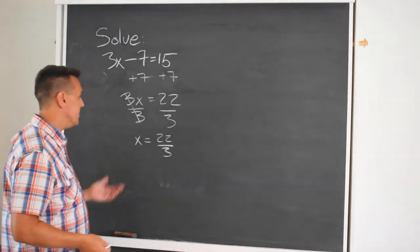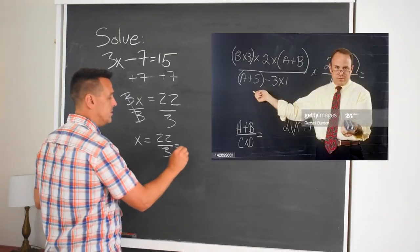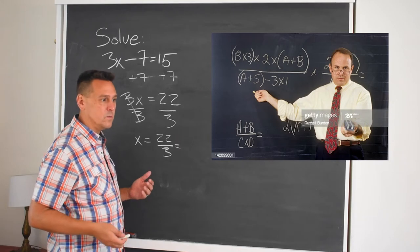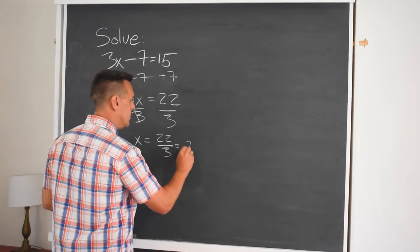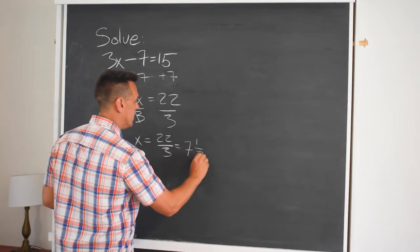The 3s cancel and we end up with x equals 22 over 3. You can be done with your answer here, or maybe your teacher doesn't like improper fractions, usually this is when you're younger, and so you would need to figure out this is 7 and a third.